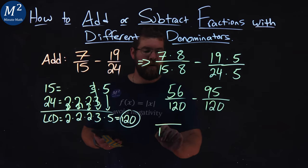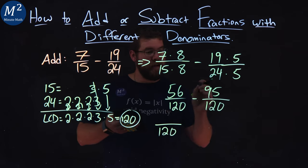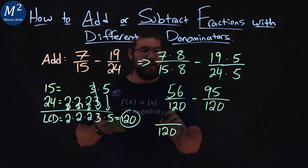We can combine the fractions to be one big one. 56 minus 95 is negative 39 over 120.